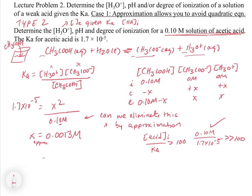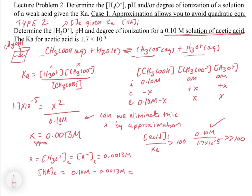X equals the concentration of H3O+, which equals the concentration of A-, both equal to 0.0013 molar. The concentration of HA at equilibrium equals 0.10 minus 0.0013, giving 0.0987 molar, which rounds to 0.10 molar by significant figures — nearly 99% of the original value. The effect on the initial concentration of HA is very, very tiny.